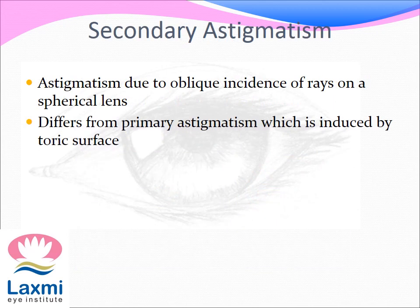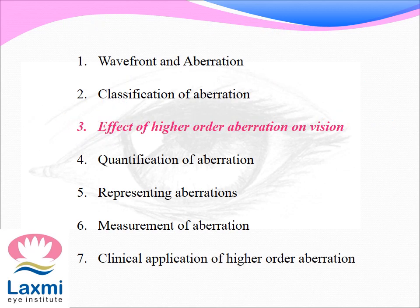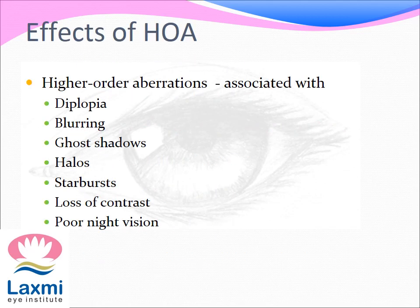Secondary astigmatism is due to oblique incidence of rays on a spherical lens. It differs from primary astigmatism, which is induced by a toric surface. Higher order aberrations are associated with the following: diplopia, blurring, ghost shadows, halos, starbursts, loss of contrast, and poor night vision.